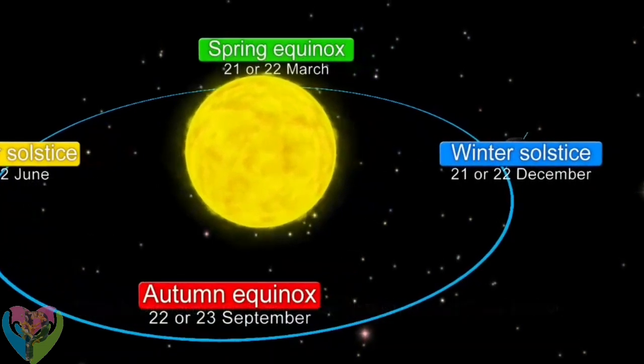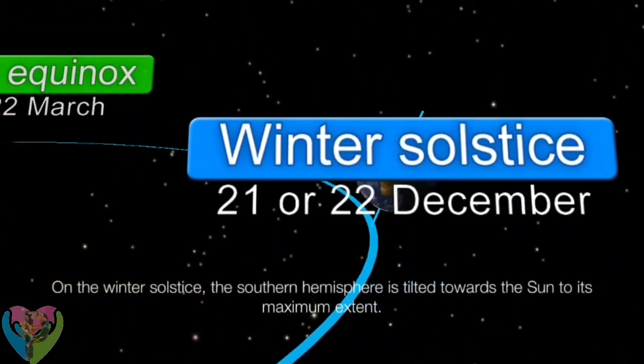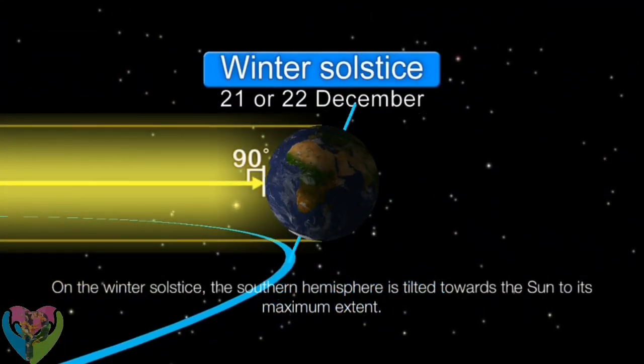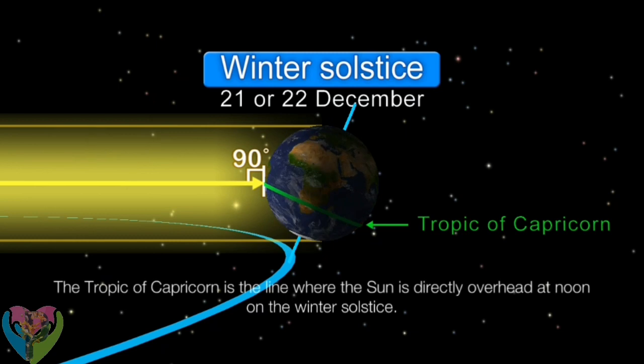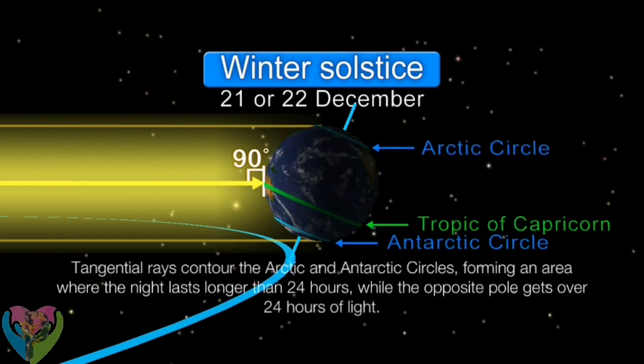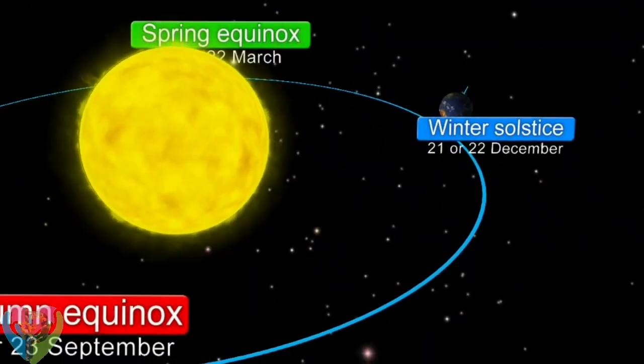On the winter solstice, the southern hemisphere tilts to its maximum extent toward the Sun. The Tropic of Capricorn is the line where the Sun is directly overhead at noon on the winter solstice. Tangential rays contour the Arctic and Antarctic circles, forming an area where the night lasts longer than 24 hours, while the opposite pole gets over 24 hours of light.